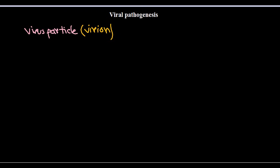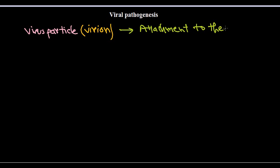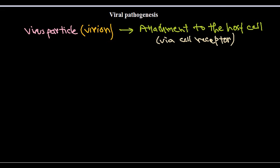So the very first step is the attachment of the virion to the host cell surface, via any kind of cell receptor. This process can also be considered part of adsorption, which is a simple surface interaction between the virion and the host cell.